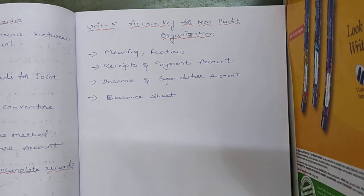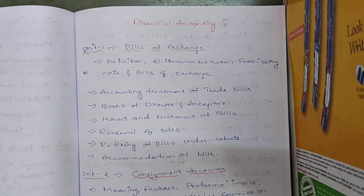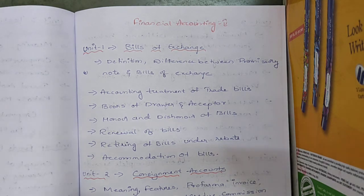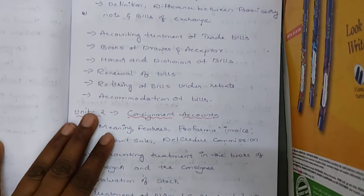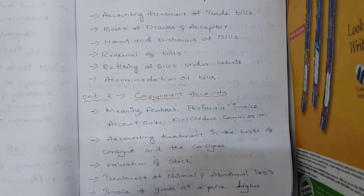Same as FA1 in your first semester, FA2 also has five units. From each unit you will be getting two questions, which may be theory or problem-based. You have to prepare all topics: bills of exchange, consignment accounts, joint venture accounts, accounts from incomplete records, and accounting for non-profit organizations.